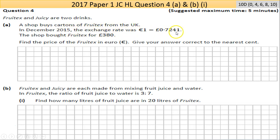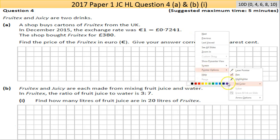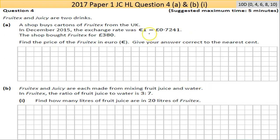The shop bought Fruitex from the UK. The exchange rate gives you your statement, your equation. The shop bought Fruitex for 380 pounds — find the price in euro. The problem with this exchange rate is we're given euro to pounds, but we want pounds to euro. So we need to find how many euros are in one pound. The way to convert this is to divide both sides by 0.7241.